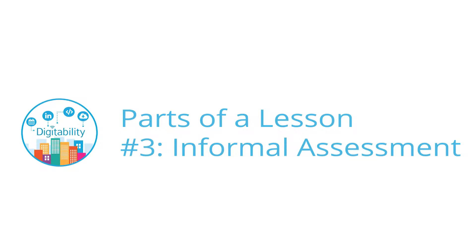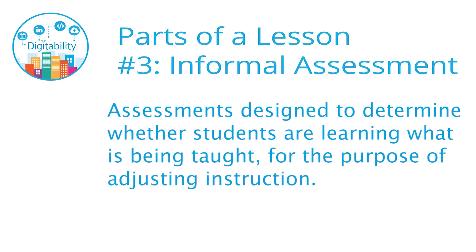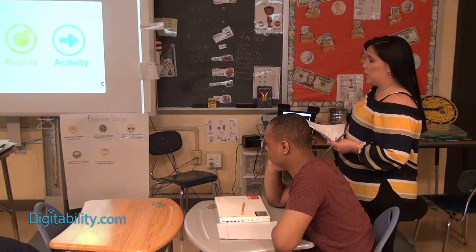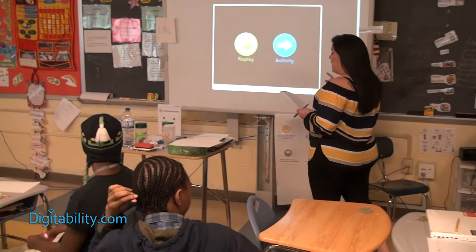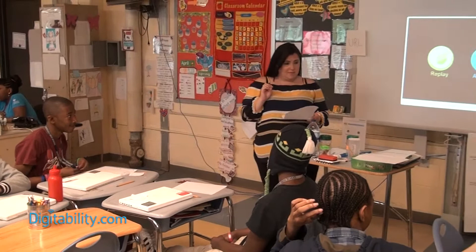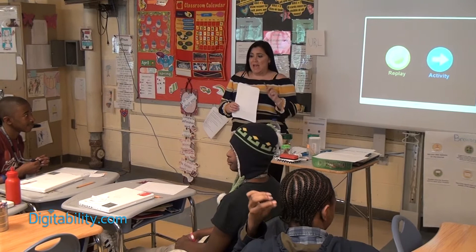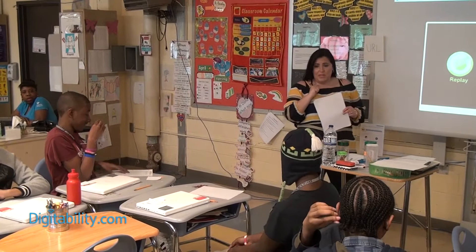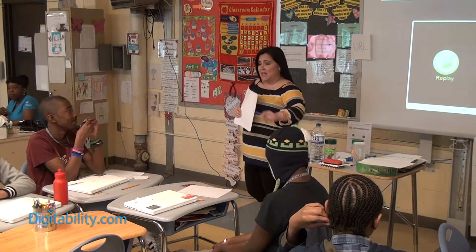Before moving on to the group activity, Dawn administers an informal assessment. In this third part of the lesson, Dawn probes students with questions designed to determine their level of comprehension of new concepts. Student responses guide Dawn on how to adjust instruction. Dawn asks: 'Can anybody tell me what a URL is? Think about what I said about Robert and what you heard in the video.' Isaiah answers: 'The address of the website.' Dawn responds: 'I love it, Isaiah. The address of the website.' Browsers let us view the internet, which is a computer network.